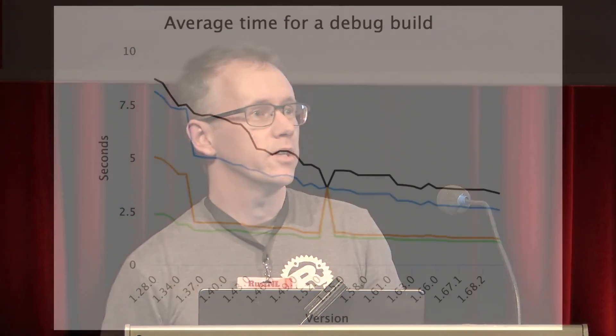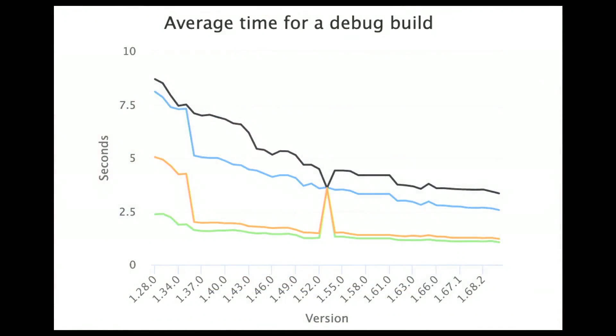The starting point for this talk is that the Rust compiler is slower than we would like. Thanks to a lot of work by many people, it's about three times faster than it was when I first started working on it in 2016, but people still complain. Unfortunately speedups are getting harder to find. Today if a new contributor asks how they can help with compiler speed, I don't have a good answer because all the low-hanging fruit is gone — there are no easy optimization tasks left.